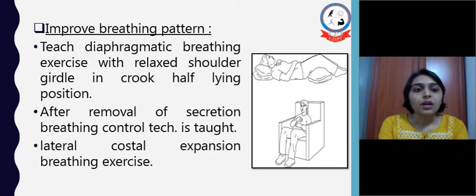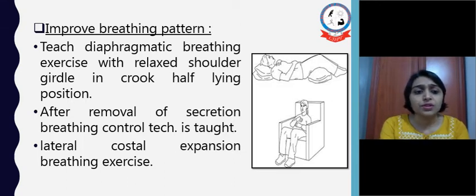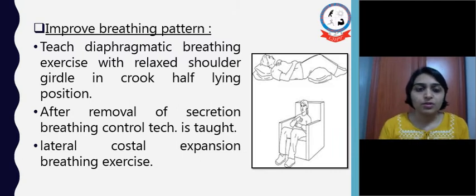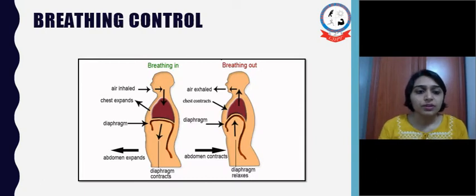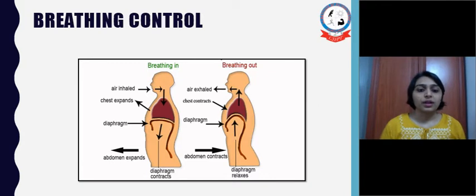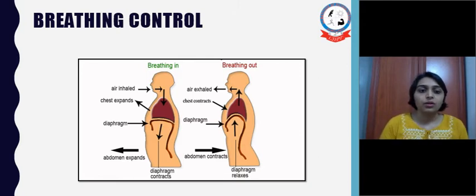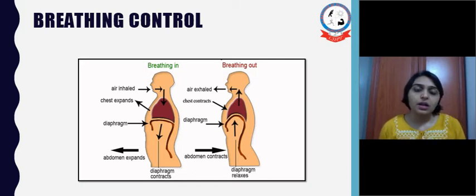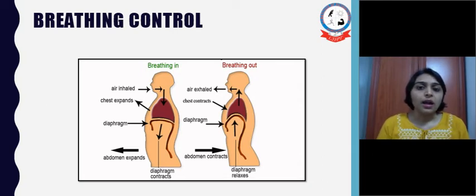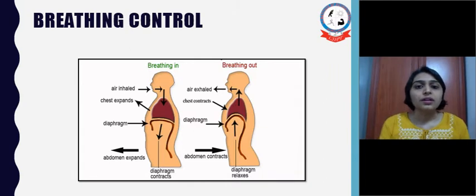To improve breathing pattern, teach diaphragmatic breathing exercises with a relaxed shoulder girdle in crook lying position. After removal of secretion, breathing control technique is also taught. Lateral costal expansion breathing exercises help to improve breathing across all segments of the lung. The patient is asked to inhale through the nose and exhale through the mouth; during inspiration the abdomen should expand and during expiration it should go in, so we can confirm diaphragmatic movement is occurring in the correct pattern. This can initially be taught in semi-crook lying position, then progressed to sitting, standing, and incorporated during walking and stair climbing to reduce breathlessness.